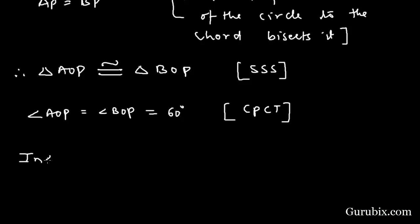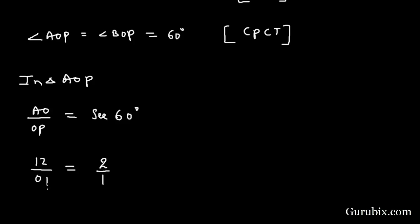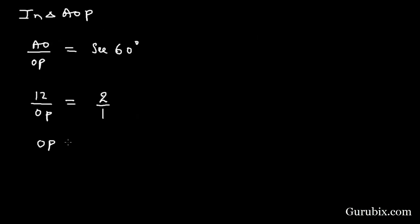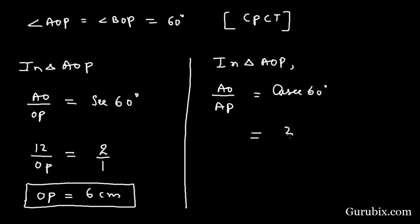Moving to triangle AOP: since angle AOB is 120°, angle AOP is 60°. Using the ratio AO/OP = sec 60° = 2, and AO is 12 cm, we get OP = 6 cm. Again in triangle AOP, the ratio AO/AP = cosec 60° = 2/√3, and AO is 12 cm, so AP equals 6√3 cm.